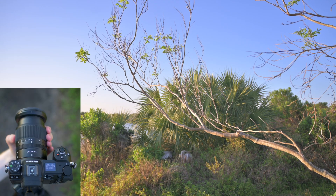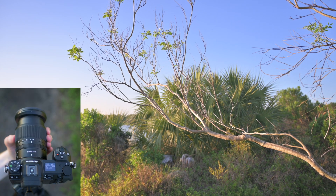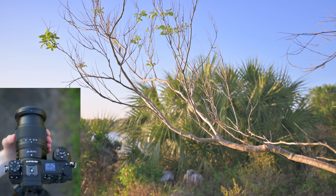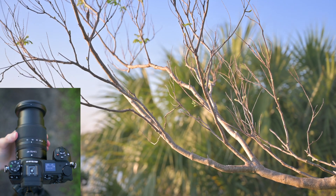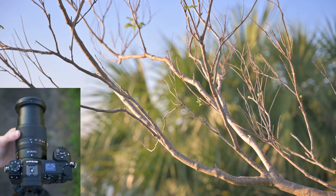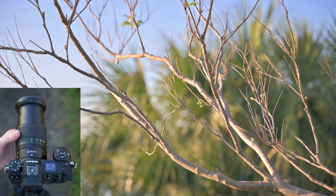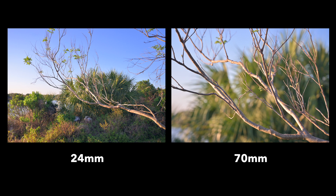The next factor is focal length. When you zoom in but don't change anything else, depth of field starts to get shallower and shallower. Take a look at the detail in the background of these two photos — it's a really big difference between 24 and 70 millimeters.